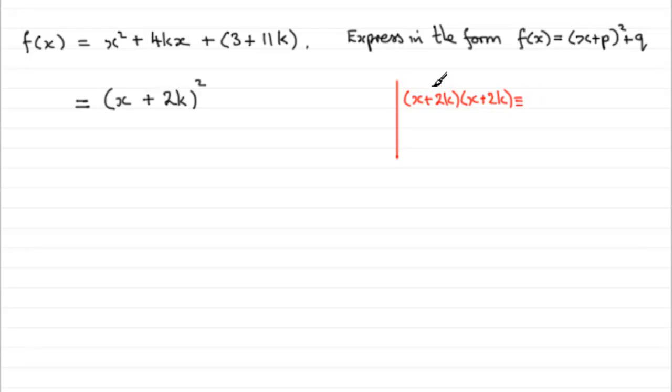What do we get? Well, this is identical to x times x, which is x squared, x times 2k, which is 2kx. Then we've got another 2k times x, another 2kx. And then we've got the last term, 2k times 2k, which is plus 4k squared.